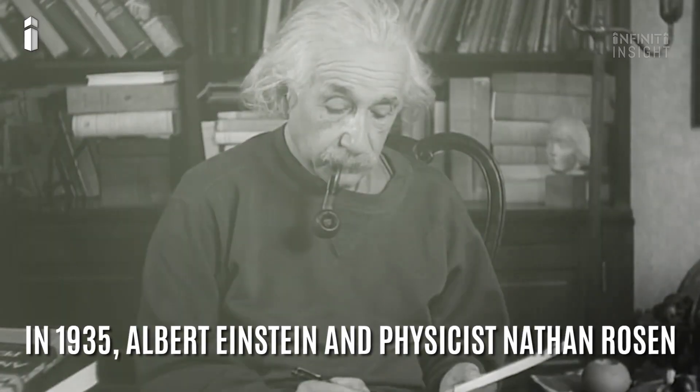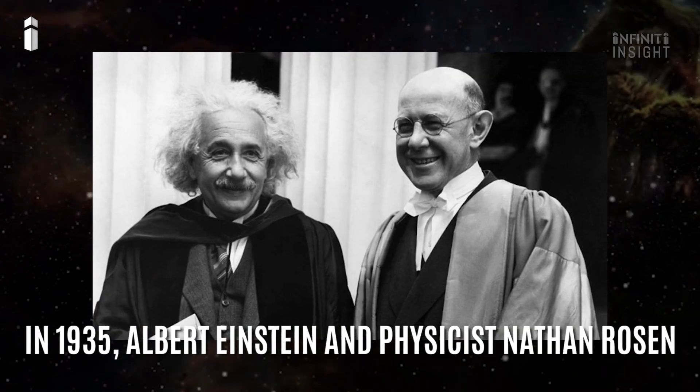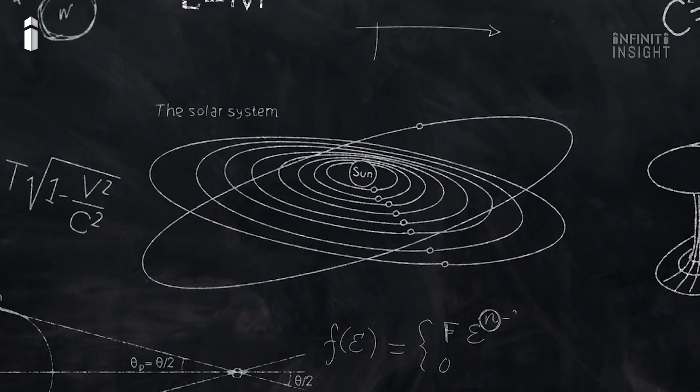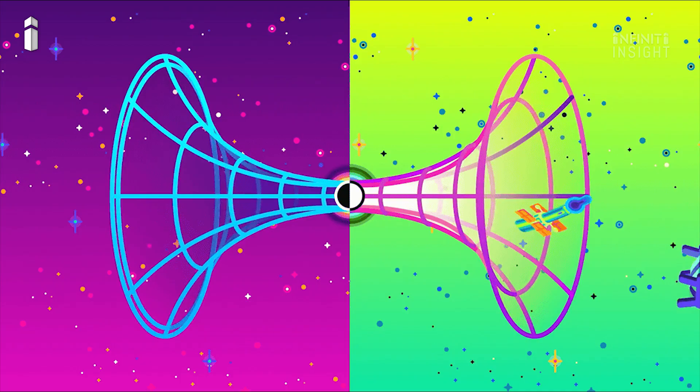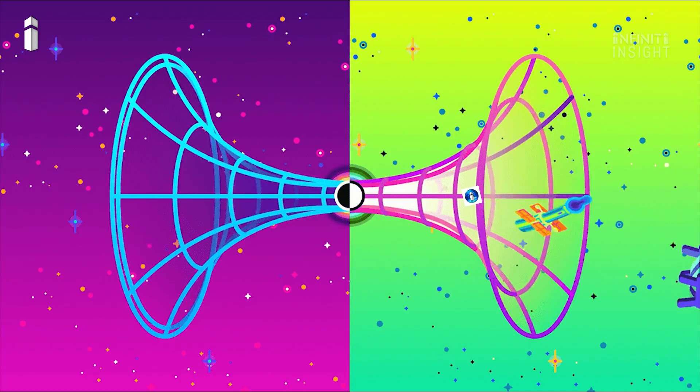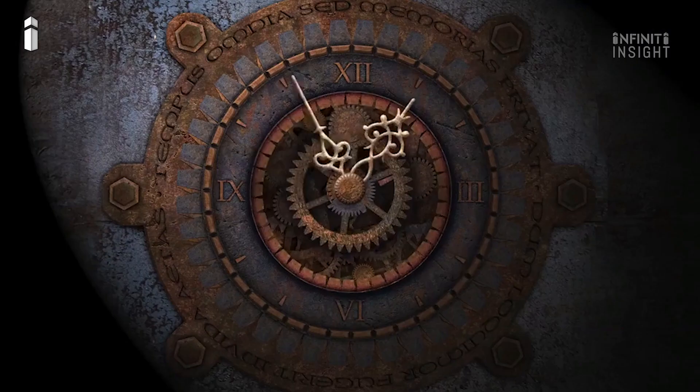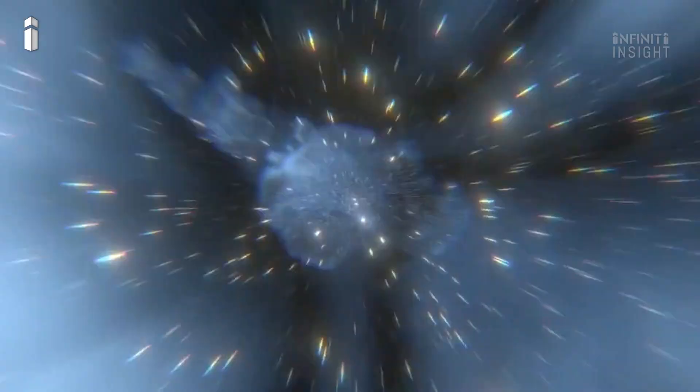In 1935, Albert Einstein and physicist Nathan Rosen came up with the idea of bridges in space-time. They showed that according to the general theory of relativity, wormholes are a definite possibility. A wormhole acts as a tunnel between two different points in space-time, which is just the continuum of space and time that makes up the fabric of the universe.